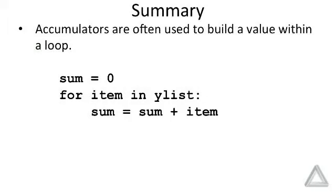We also talked about accumulators, and they're used to build a value where we're building within the loop. The accumulator changes for each iteration of the loop. And here's an example where we are using the identifier sum as an accumulator.